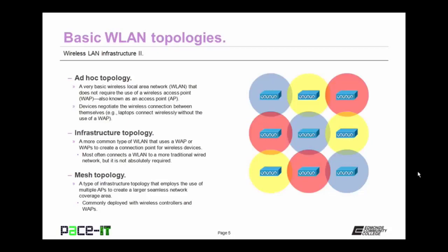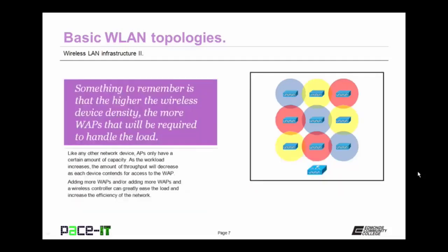Then there's the mesh topology. This is a type of infrastructure topology that employs the use of multiple access points to create larger seamless network coverage areas. They're commonly deployed with wireless controllers and wireless access points. The higher the wireless device density, the more wireless access points that will be required to handle the load. Like any other network device, access points only have a certain amount of capacity. As the workload increases, the amount of throughput will decrease as each device contends for access to that wireless access point. Adding more WAPs and wireless controllers can greatly ease the load and increase the efficiency of the network.